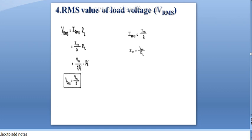Next, the RMS value of load voltage V_rms. V_rms = I_rms × RL. Since I_rms = Im/2 and Im = Vm/RL, substituting gives V_rms = Vm/2. That is the RMS value of load voltage.